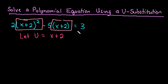We're going to replace all of our x plus 2's with u, so now we're going to solve the equation 2u squared minus 5 times u equals 3.